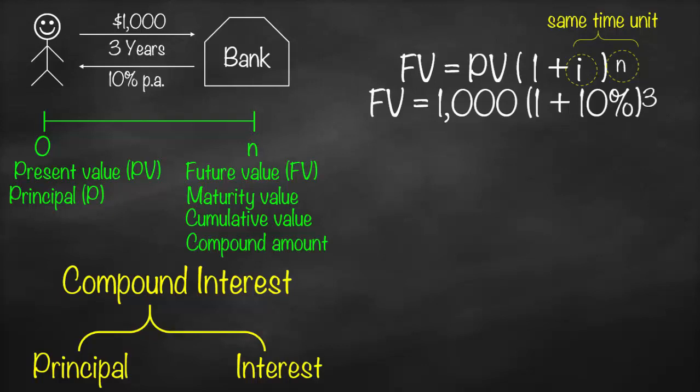So what would be the future value here? We have present value of 1000 multiplied by 1 plus interest of 10%, close bracket, to the power three years. Here I know that the interest is per annum and the time is three years, both of them have same time unit, and that's why we don't need to make any adjustment. So this will give us a future value of 1331.